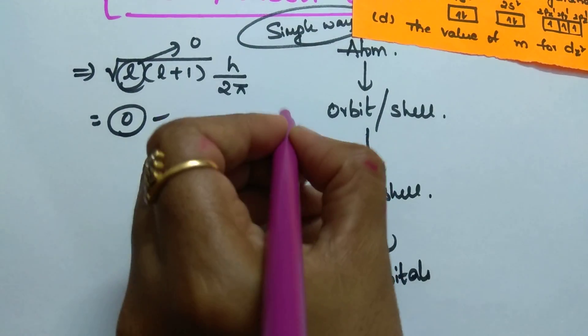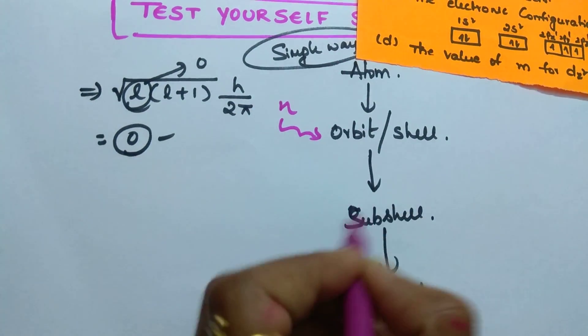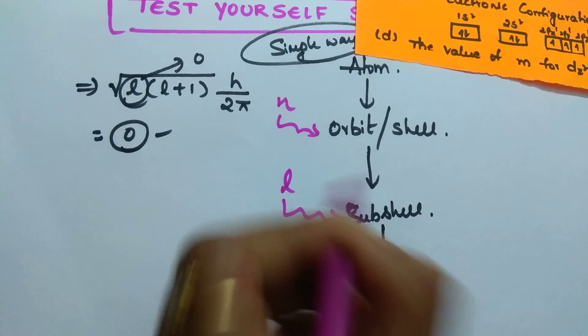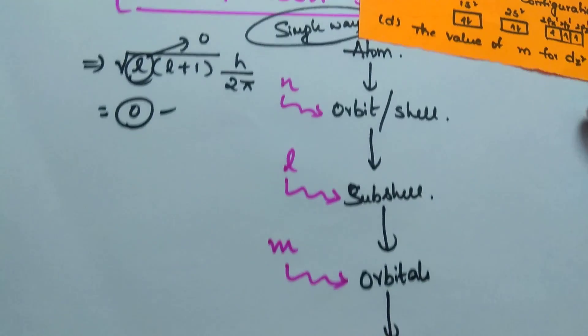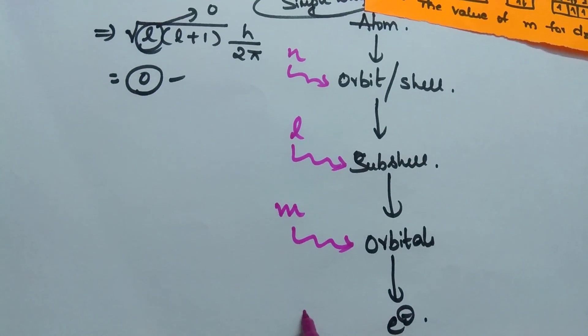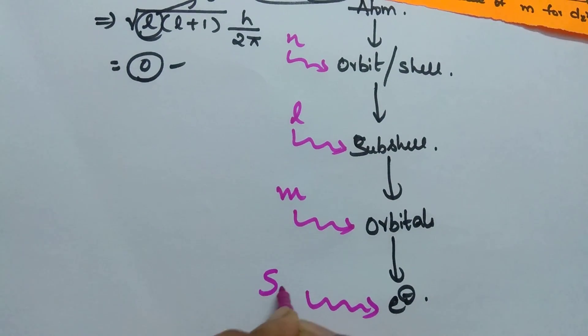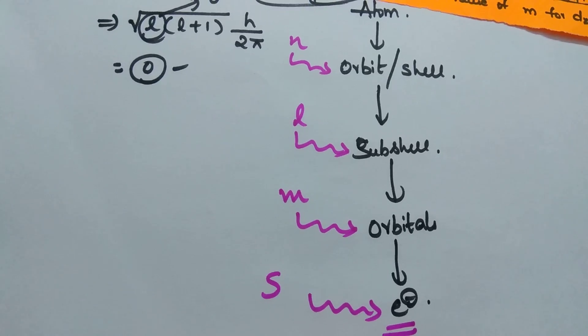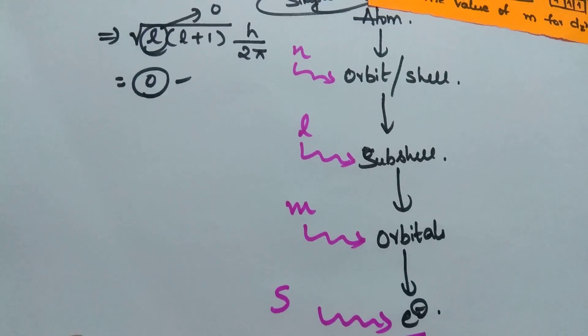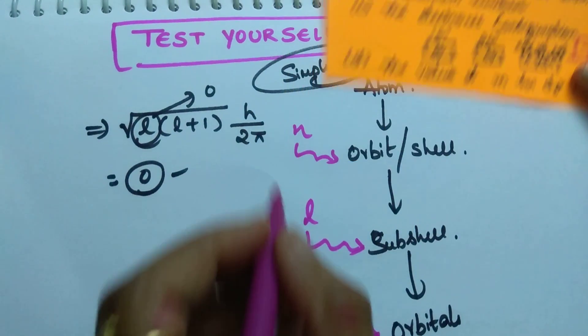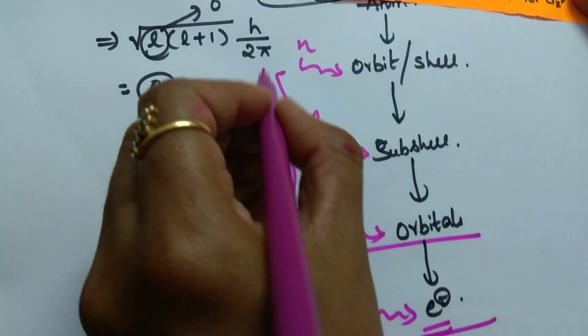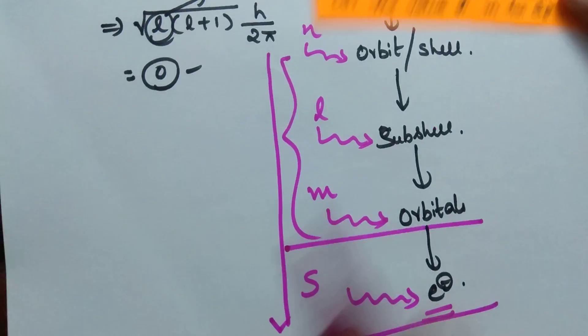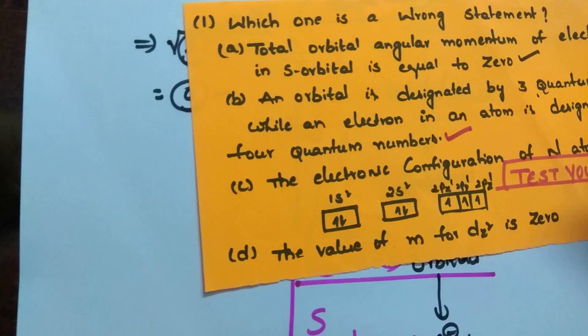In this, principal quantum number explains about this and azimuthal quantum number explains about sub-shell and magnetic quantum number gives information about the orientation of the orbitals. And spin quantum number gives the information about electron where it is present in that particular orbital. So, we need 3 quantum numbers to explain about the orbitals but to explain about the electrons, 4 quantum numbers are required. So, this statement is also correct.